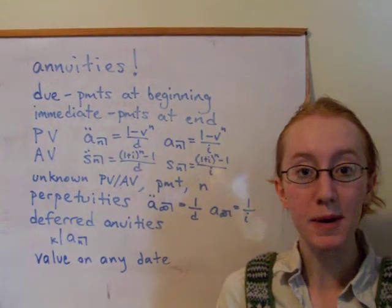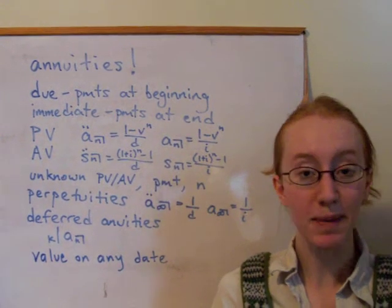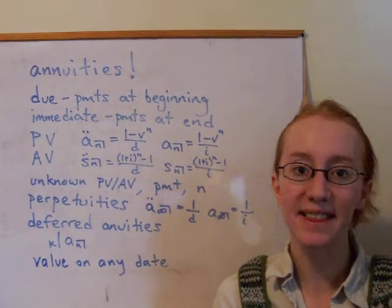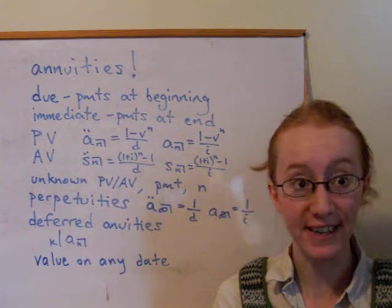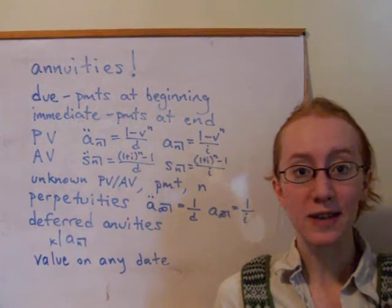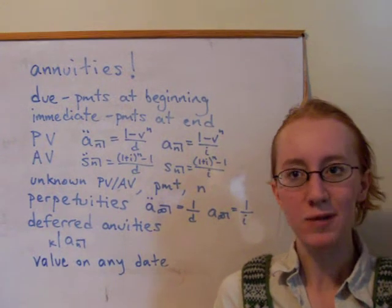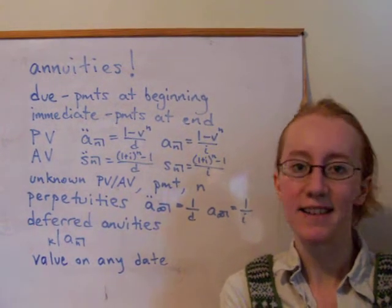From there we looked at perpetuities, which are just annuities that have no end date. So the payments actually keep going forever at this regular interval. So every year, forever, you get a certain level payment. And there are perpetuities due and immediate, just like with annuities. A perpetuity due would have one payment right now, and then payments forever.